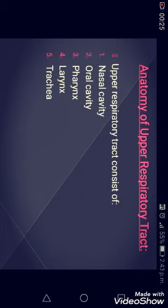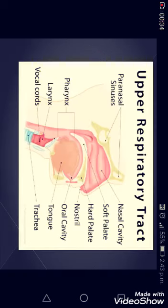The upper respiratory tract consists of the nasal cavity, oral cavity, pharynx, larynx, and trachea. In the diagram, we show these components along with further divisions such as soft palate, hard palate, nostril, and tongue, which are subdivisions of the nasal cavity and oral cavity.